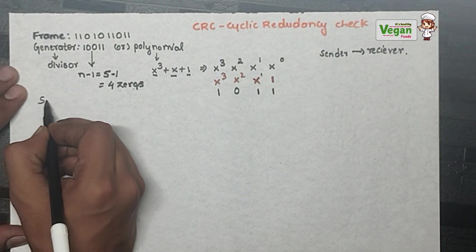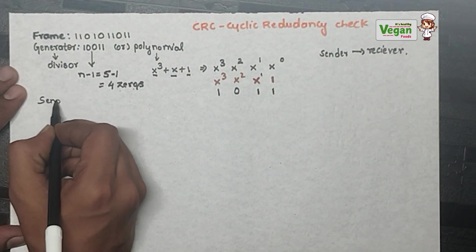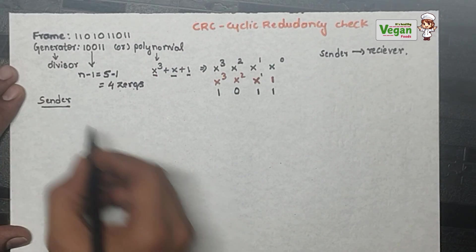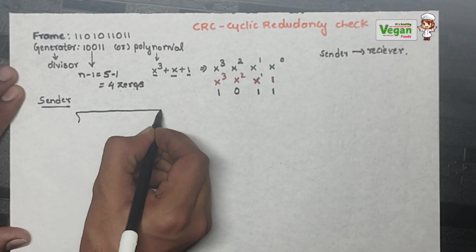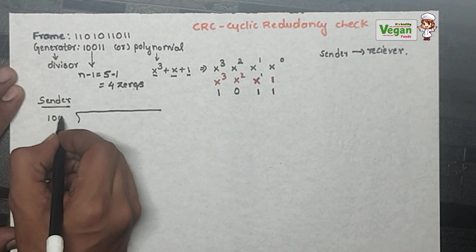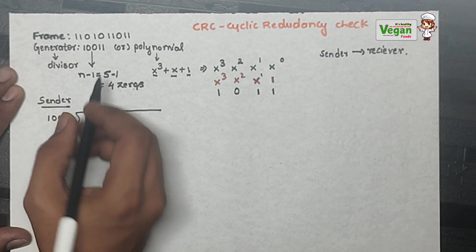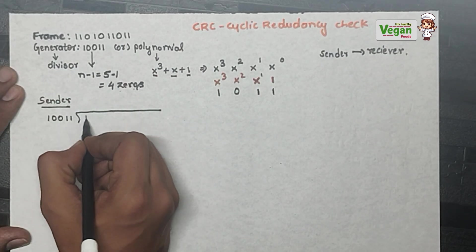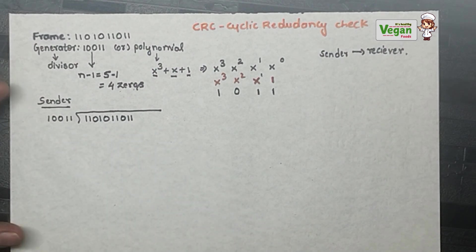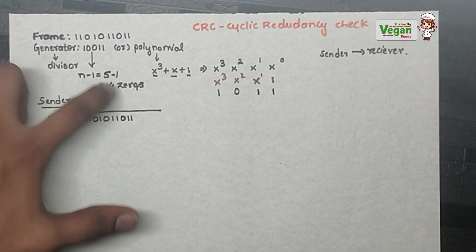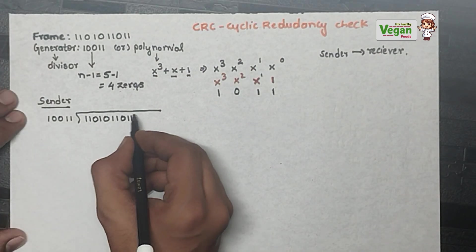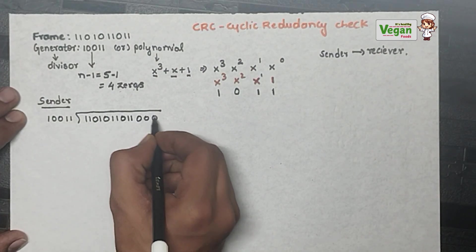At the sender side, you divide the frame using the given divisor or generator: 10011. The frame is 1101011011. You must add 4 zeros to the given frame at the sender side, so add 0000.